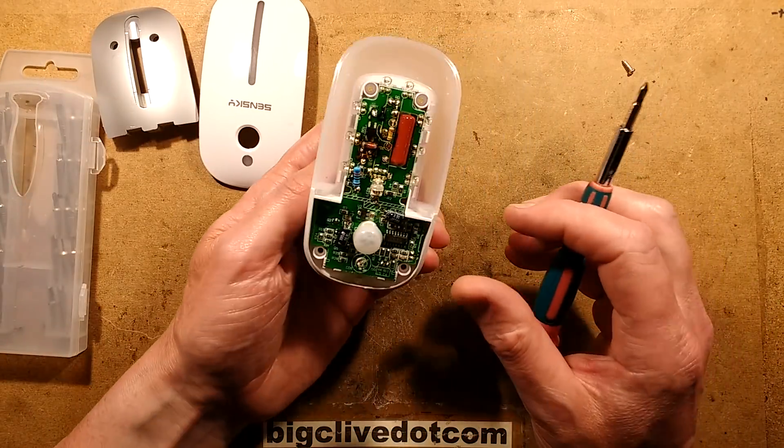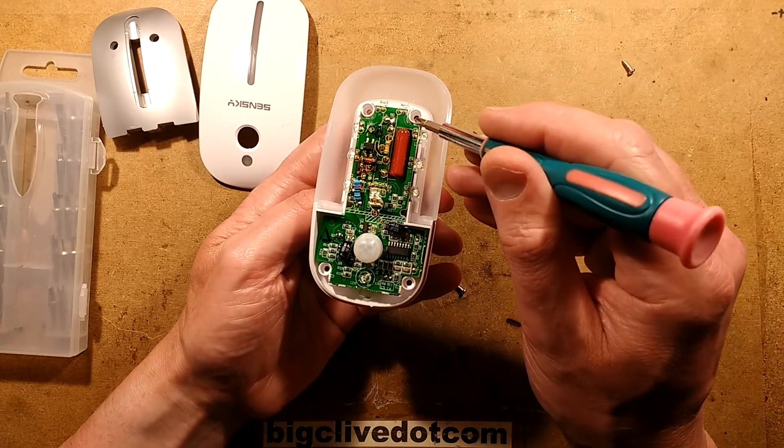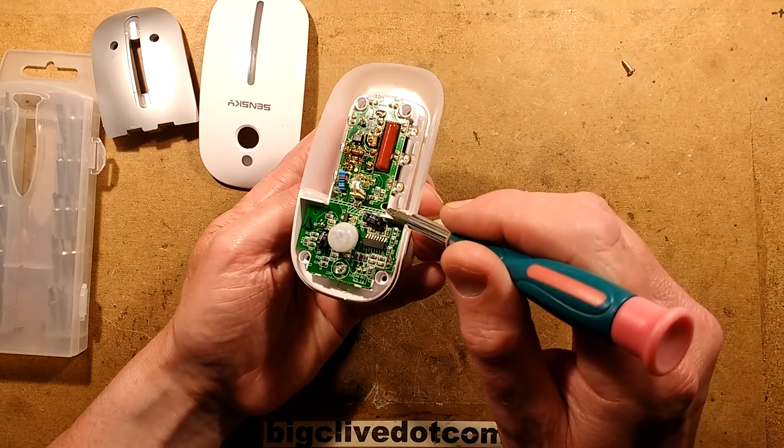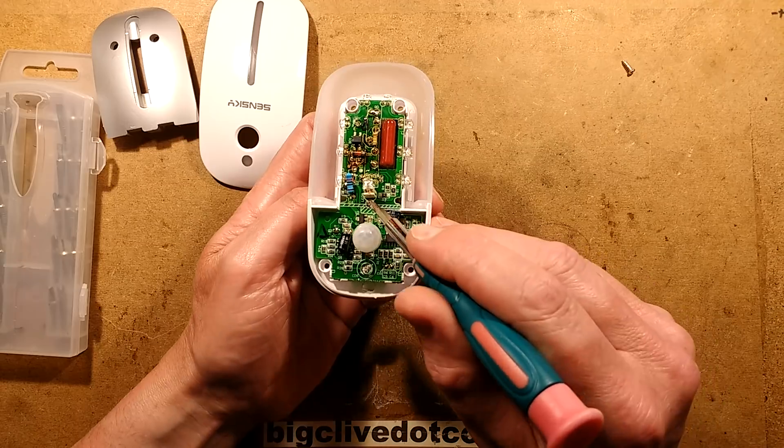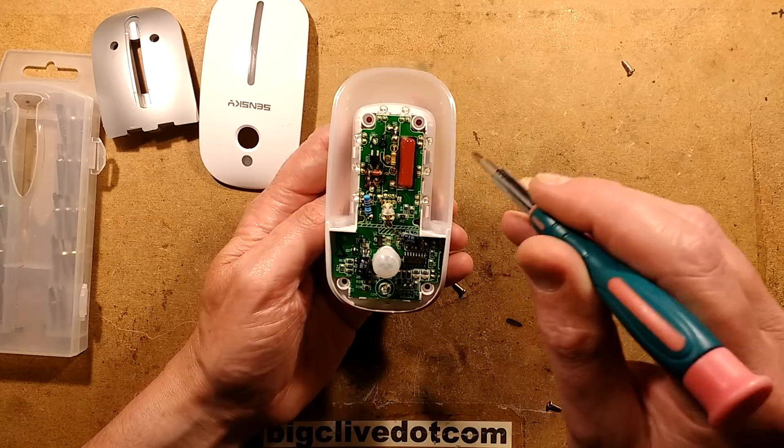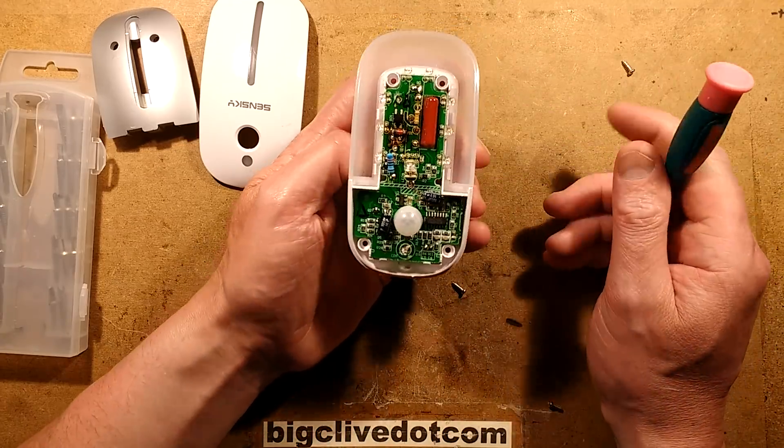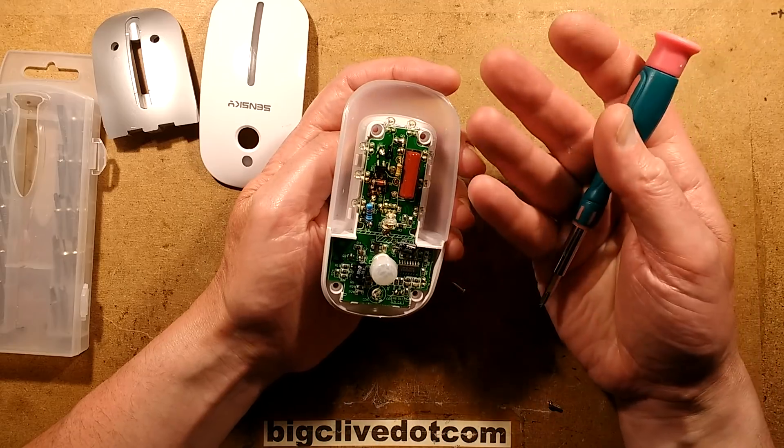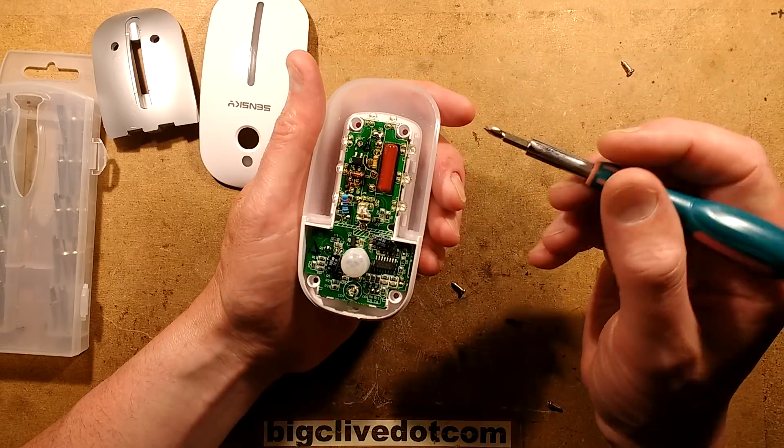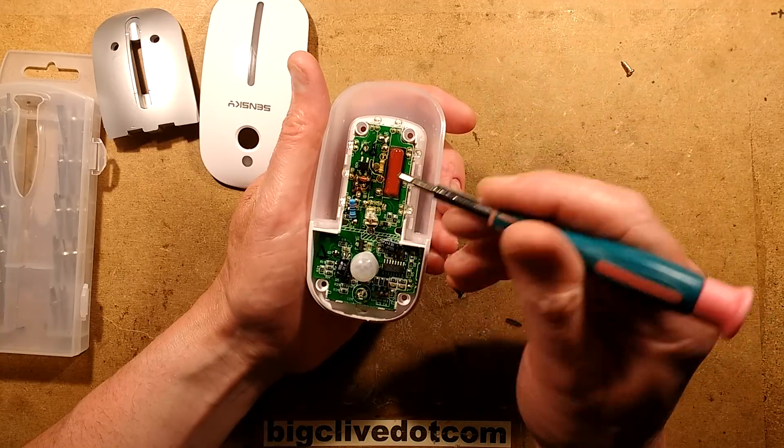We've also got a ring of LEDs around the outside which are all wired in series. Looks like it might be wired in series with this LED as well. Not sure. So there's one, two, three, four, five, six, seven, eight LEDs. Typically the combined forward voltage would be about three volts times eight, so that could have been a 24 volt zener just to cap the voltage when the LEDs are off.